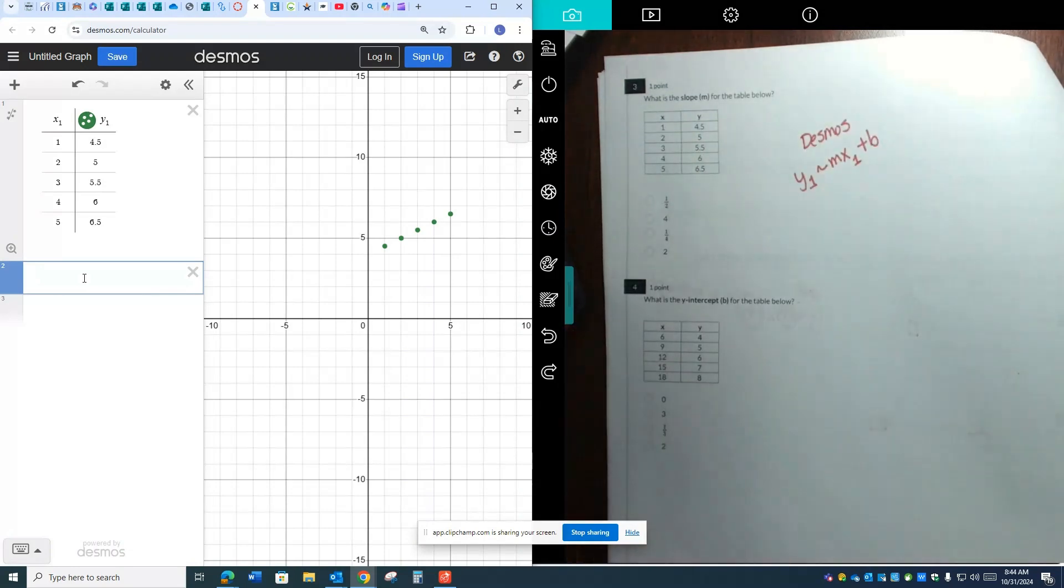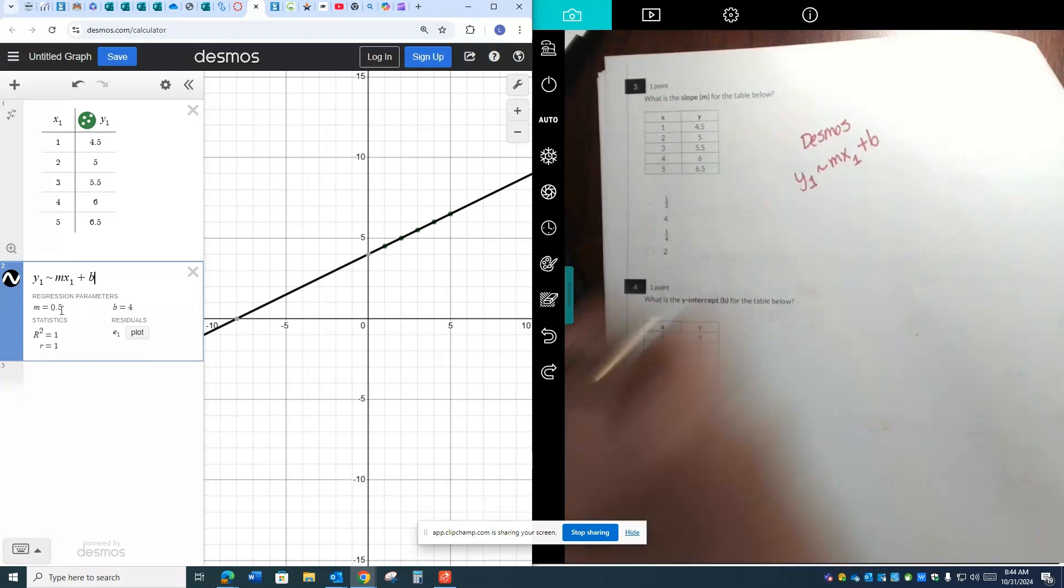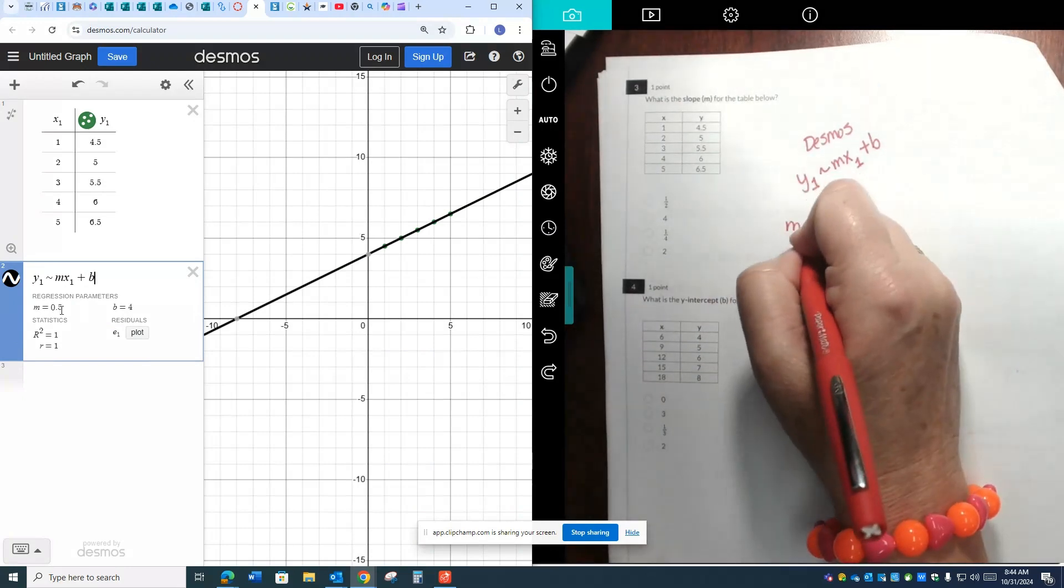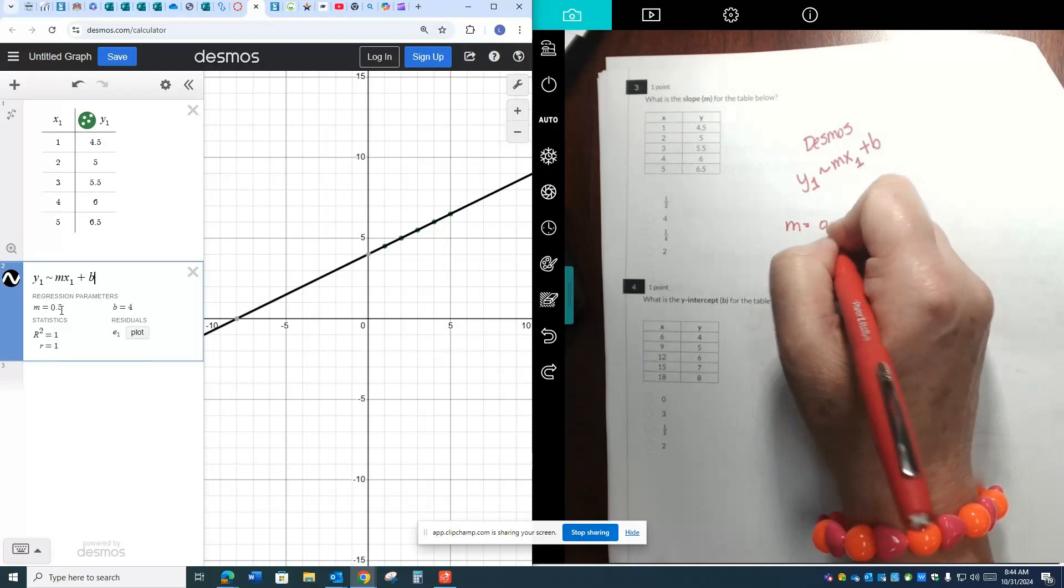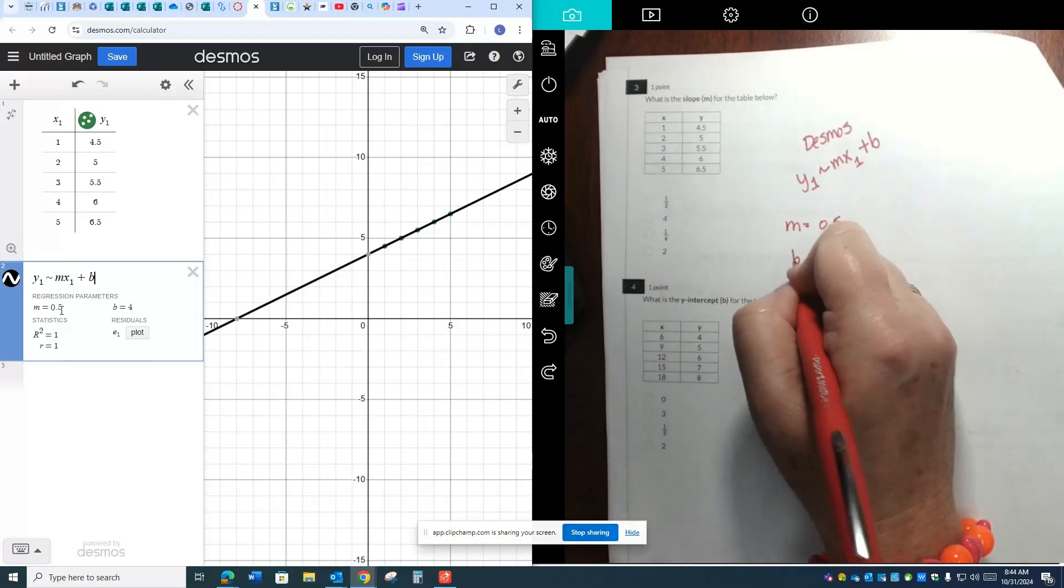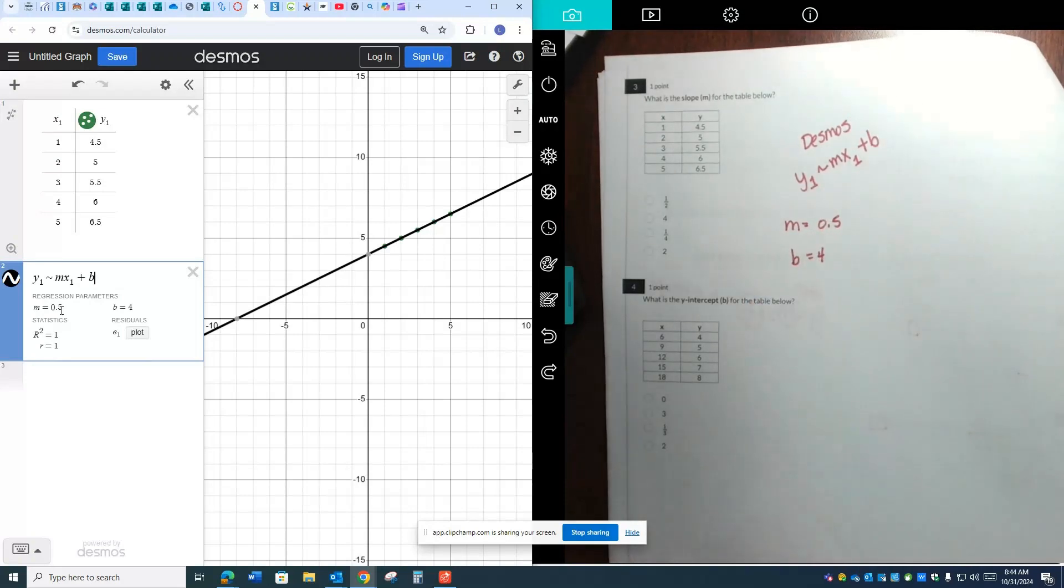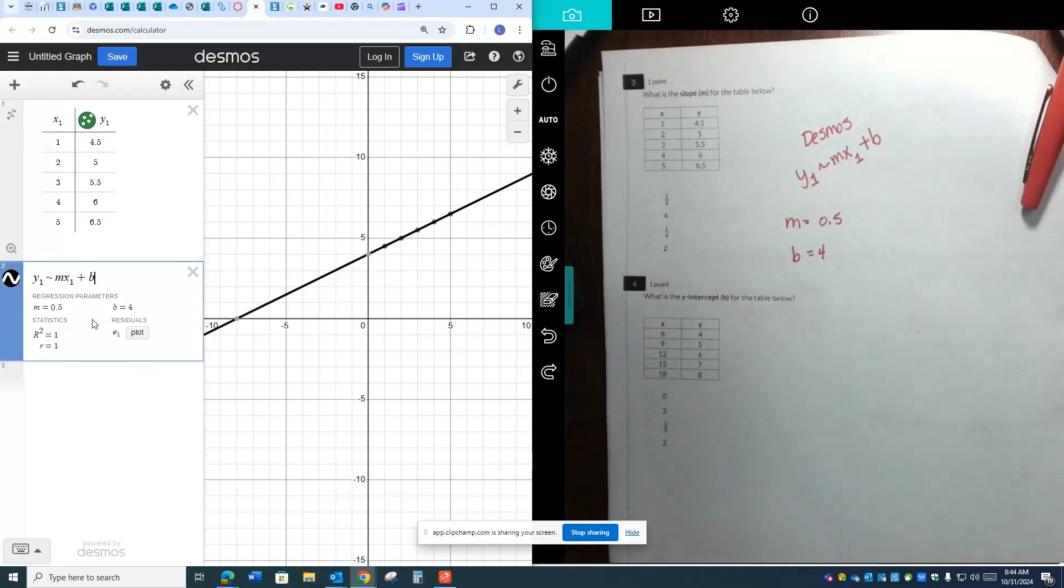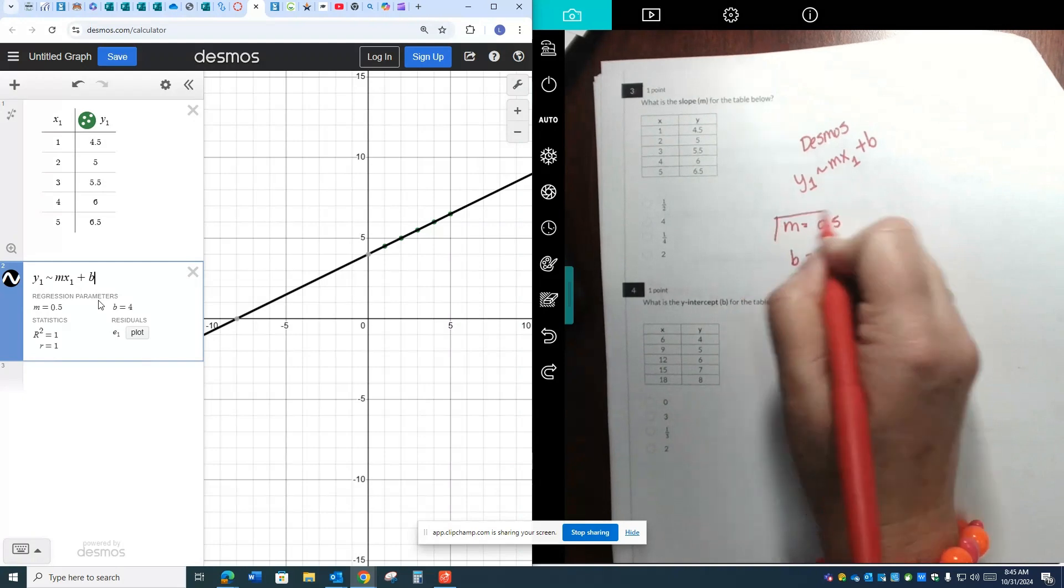That's probably going to be our slope. But the way to get Desmos to tell us our slope is, let's write this on your test, y1 tilde mx1 plus b. We type this language into box 2, and it tells us right here that our slope is 0.5. Let's write it down. It tells us that our m is 0.5, and it tells us that our b is 4. I'm getting that from Desmos over here.